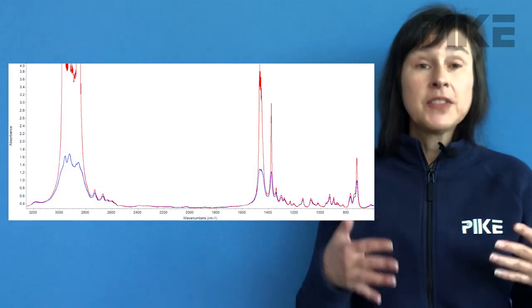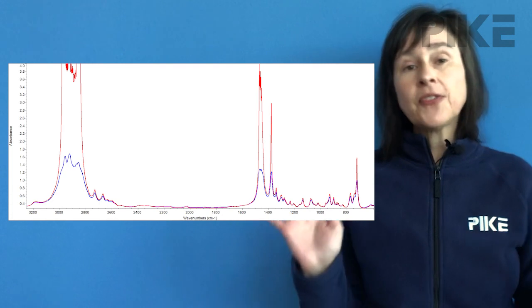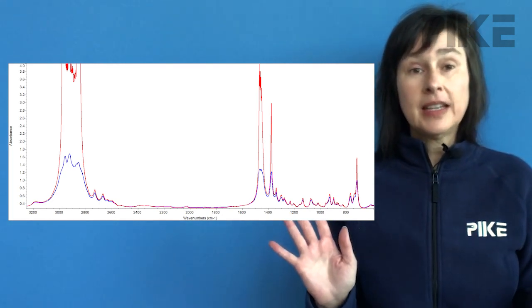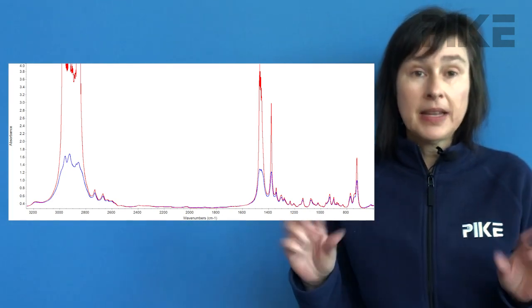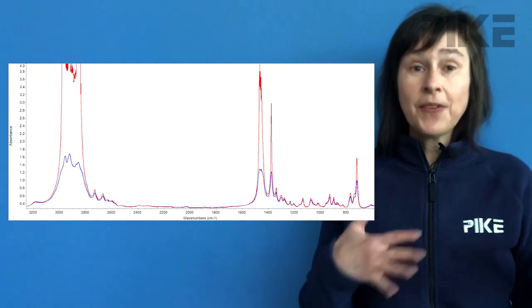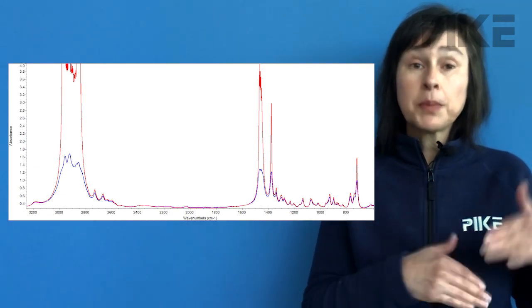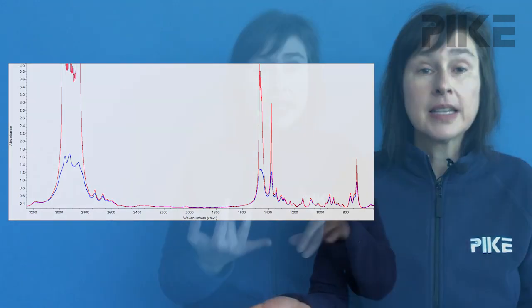So what do we notice about this spectrum? We notice we have some really strong bands saturating. That's fine if what we're interested in are the less absorbing bands. But we also notice there's a difference between these two spectra in terms of absorbance band magnitude. So what caused this?